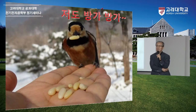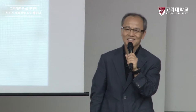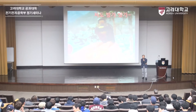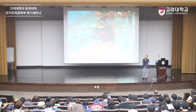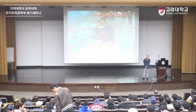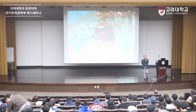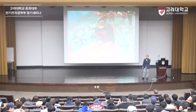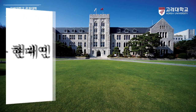이 새 이름 아시는 분 계세요? 우리나라 새 이름을 안다라는 경우는 아주 드문 경우일 거예요. 곤줄박이라는 새인데요. 우리나라 텃새 중에 아주 용감한 새예요. 먹을 걸 주면 이렇게 손에 올라와서 놀다 가죠. 오늘 우리는 이런 이야기를 합니다.